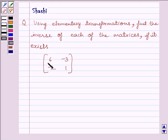The given matrix is 6, minus 3, minus 2, 1. Let us start with the solution now.